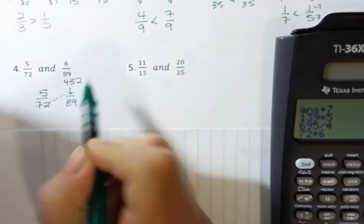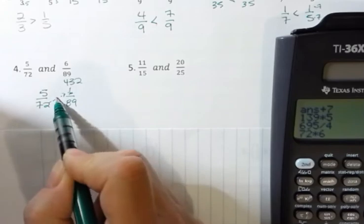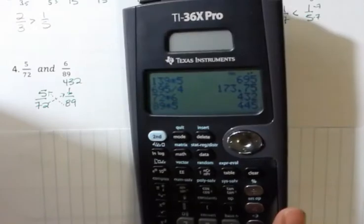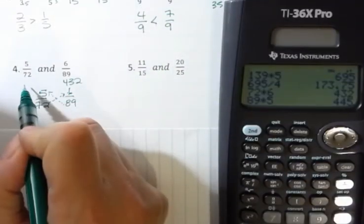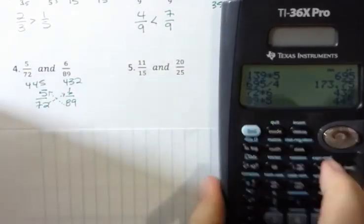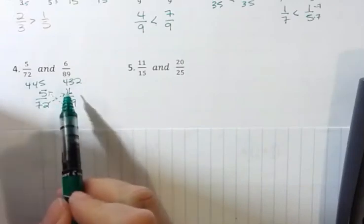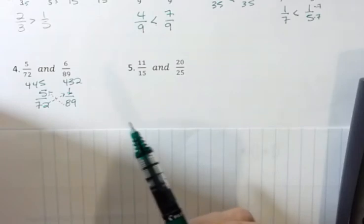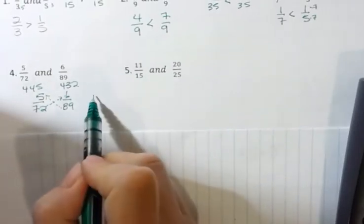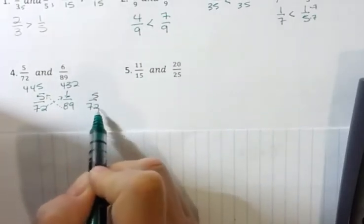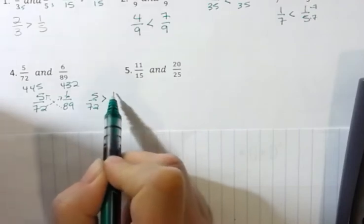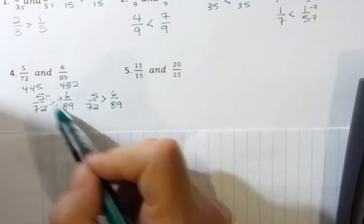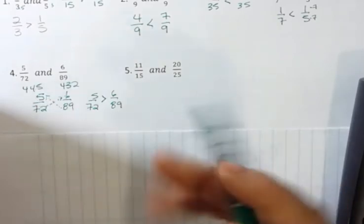Four hundred thirty-two, and then I'm going to multiply eighty-nine times five. I'm going to write that number above, four forty-five, and I'm going to compare these two fractions by looking at the number above it. Do you see how four hundred forty-five is greater than four hundred thirty-two? Well, that's how I know then that five seventy-seconds is greater than six eighty-ninths. I can do this cross multiplication thing, but it works only if you write the number above or on top of it.